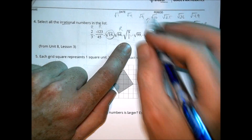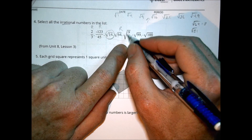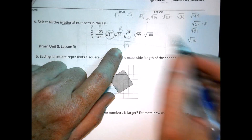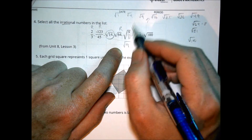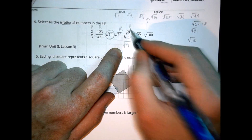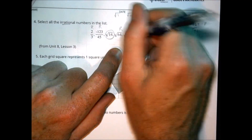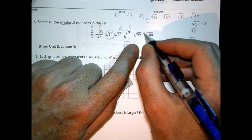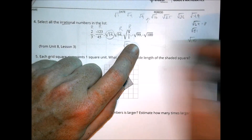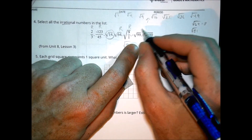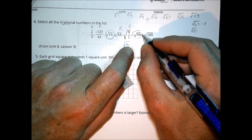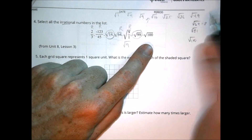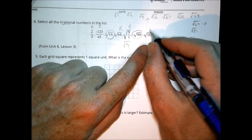The square root of 9 over 1 — well, 9 over 1 is simply 9, and the square root of 9 is 3, so that is rational. Negative square root of 99: since 99 is close to 100 but not 100, that's irrational. And the square root of 100 is 10, making it negative 10 — and that is a rational number.